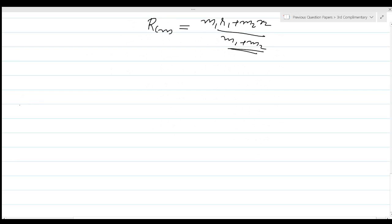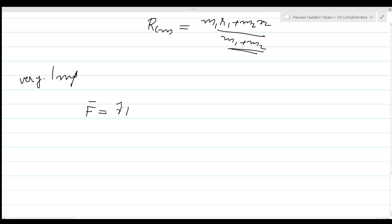What is important is motion under central forces. Central forces are those forces acting on a particle in motion which are directed either towards or away from a fixed point. The force F is a function of r only, expressed as F equals f(r) times the unit vector r-hat.